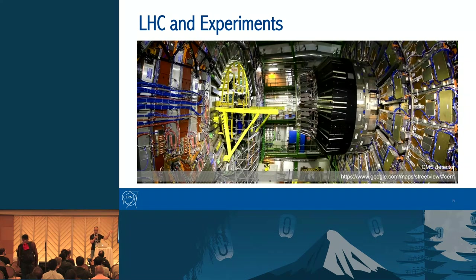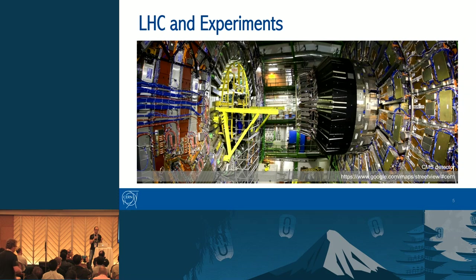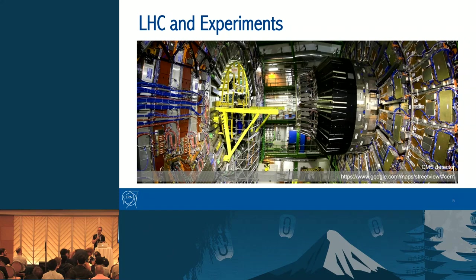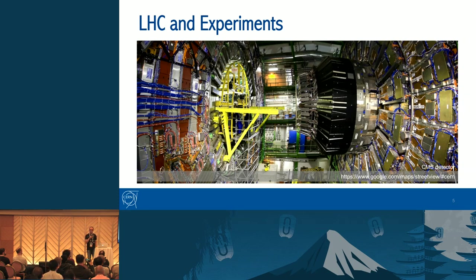Detectors like the CMS — these machines are huge. They can be up to 45 meters long, 25 meters in diameter, and weigh more than 12,000 tons, all 100 meters underground. Inside these detectors, particles from the two beams collide, generating even more particles. A detector is basically a digital camera that takes 100-megapixel pictures 40 million times per second. This generates a lot of data.